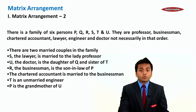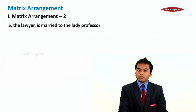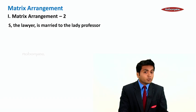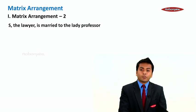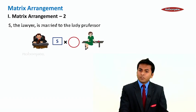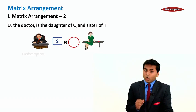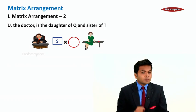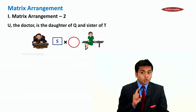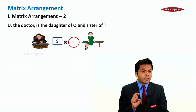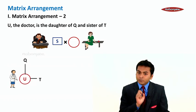Let's see how to solve this set. S the lawyer is married to lady professor, which means S is a male. The next statement: U the doctor is the daughter of Q and sister of T, which means U is female and we don't know gender of Q and T.